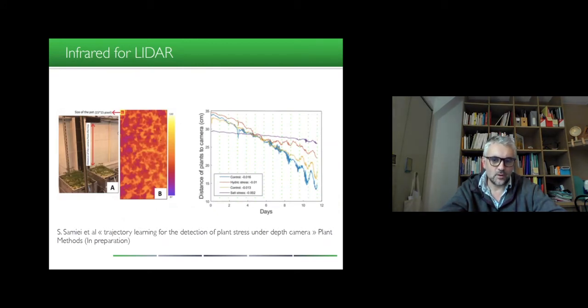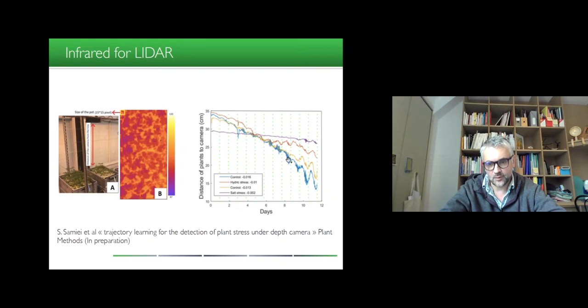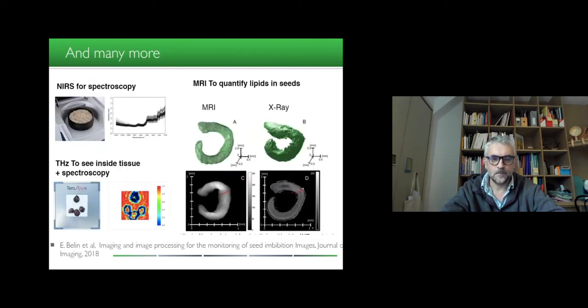Infrared can be used for LIDAR. This is something that we have published on using cameras that give directly the distance from seedlings to the camera and can monitor with a very high frame rate information on how plants are growing during day or night. Many more applications you can find. Near infrared spectroscopy can be used, also terahertz imaging, MRI can be used also to have access to quantification of the lipid in the embryo, near infrared spectroscopy to qualify the maturity of the seeds, or terahertz to detect about the presence of disease in the seed or the amount of water in the seed.